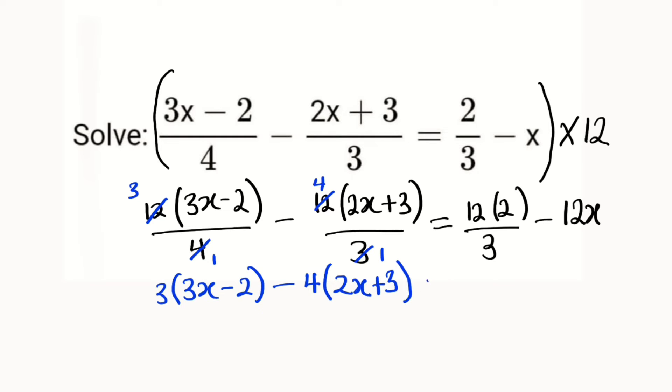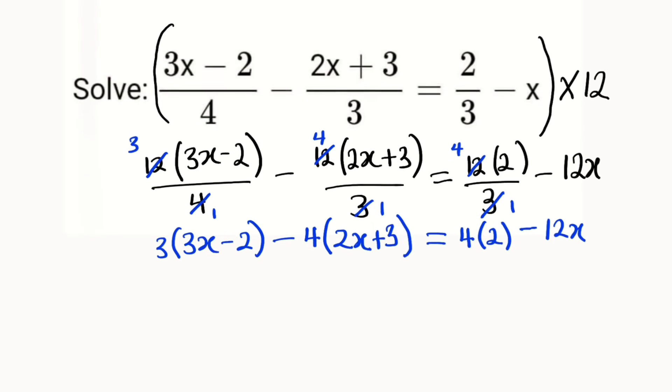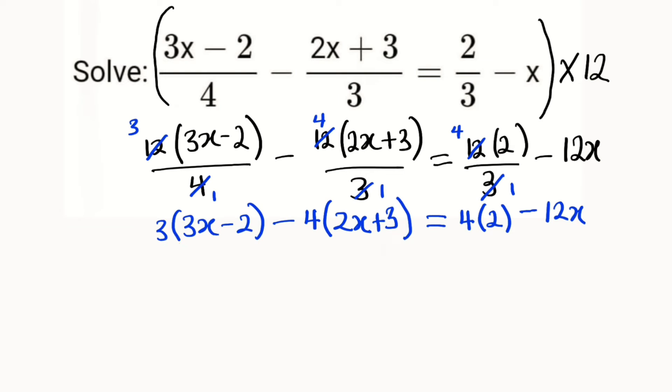On the right side, 3 goes into 12 four times, giving us 4 multiplied by 2, minus 12x. Now we expand using the numbers outside the brackets: 3 multiplied by 3x is 9x, 3 multiplied by negative 2 is negative 6, and negative 4 multiplied by 2x is negative 8x.